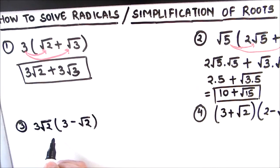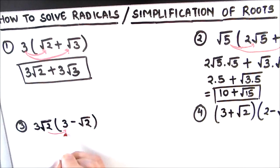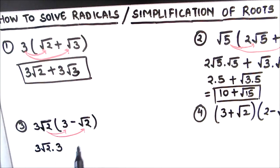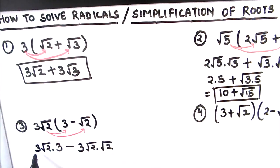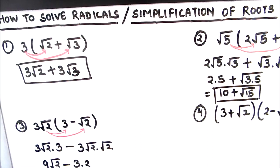The next example is 3 root 2 times the quantity 3 minus root 2. We multiply by each term: 3 root 2 times 3 gives 9 root 2, and 3 root 2 times root 2 gives 3 times 2 equals 6. With the minus sign in between, this is 9 root 2 minus 6. This is our final answer.